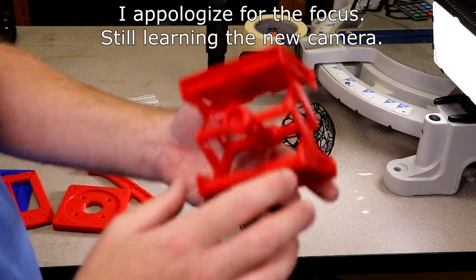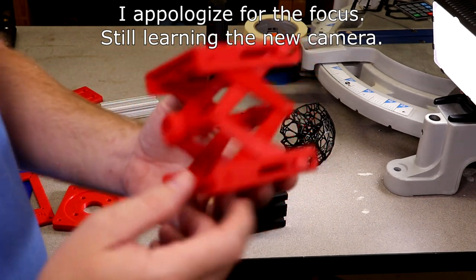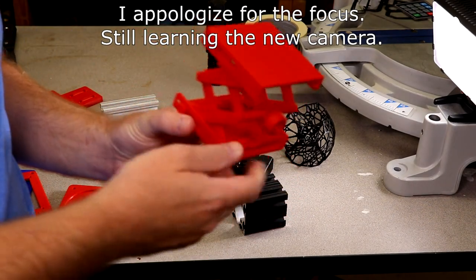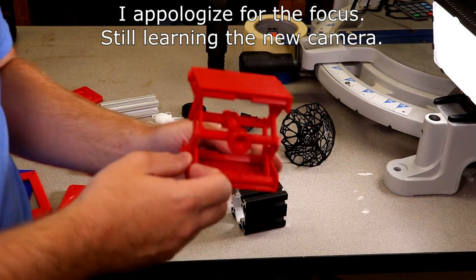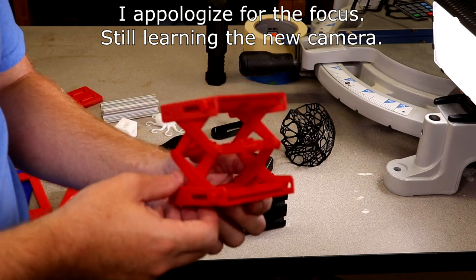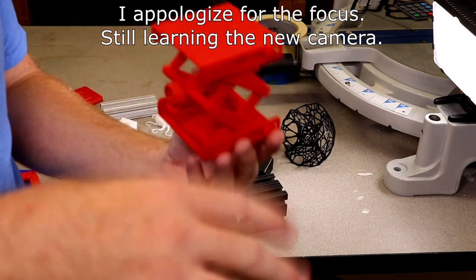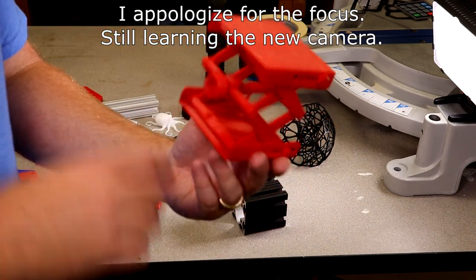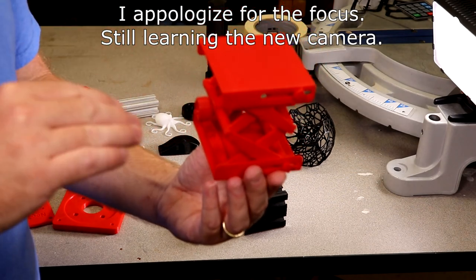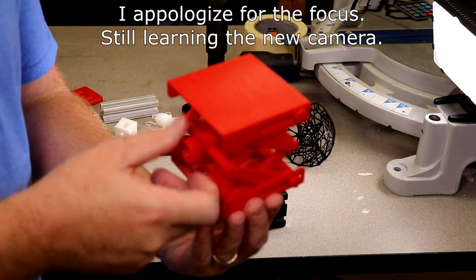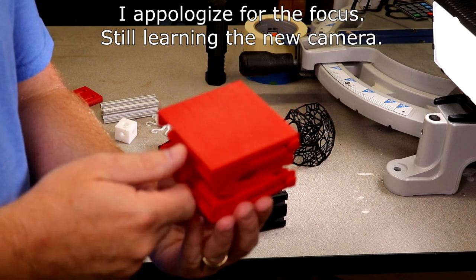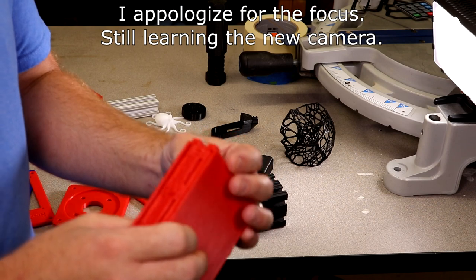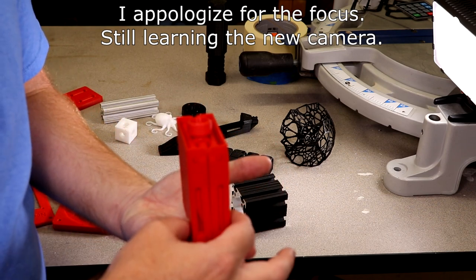This right here was the 27-hour print job—it's called a lab jack. You'd use this in a chemistry or biology lab if you're lifting something to get flows right or raising a beaker. This printed all in one piece, I did not have to assemble this at all, and it works. I finally pulled the trigger and committed to printing it, which took 27 hours. It printed standing up like this and it turned out great.